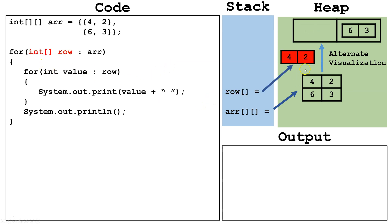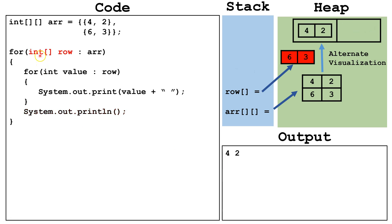Let's trace this out. We start by creating row, which points at one of the internal arrays — one of the rows in the 2D array. We go to the internal for-each loop and pull out the first value, which is four, into the variable value. We system out print line value plus a space, so it goes to the console. Then we pull out the next value, which is two, into value, and print that as well.